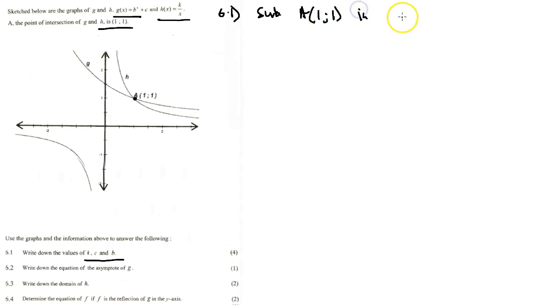If we substitute A into h(x) we'll get 1 equals k over 1, therefore k equals 1.